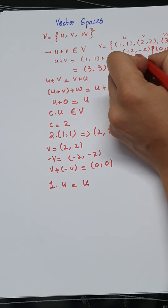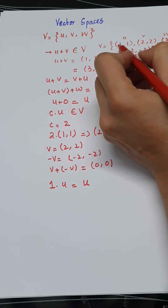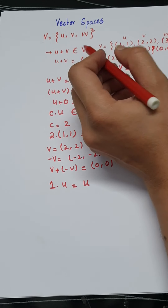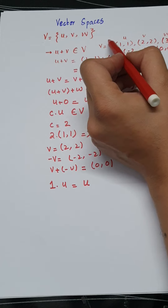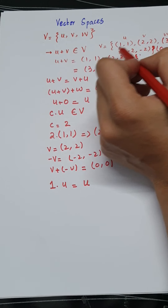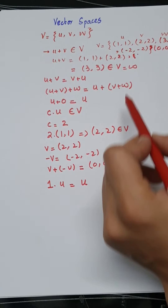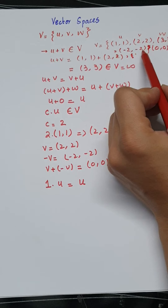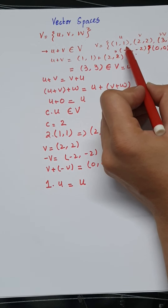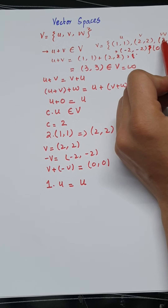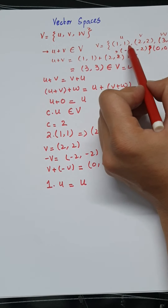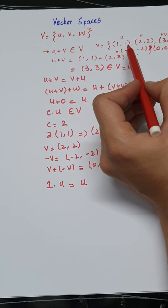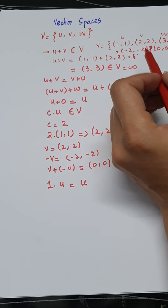As you can see, (1,1) is already present in the set of vectors. So if all these properties are satisfied for a given set of vectors, then we say that this set of vectors actually forms the vector space.